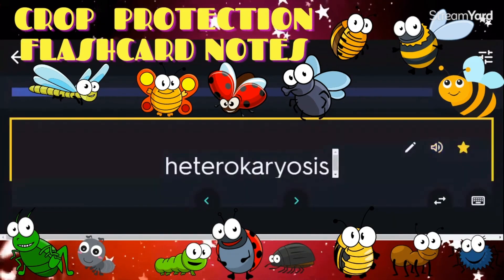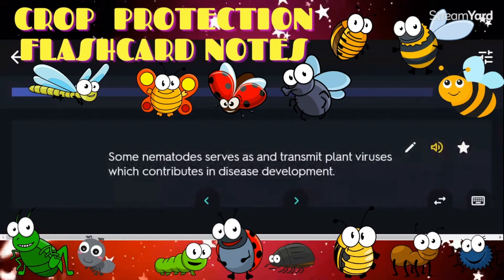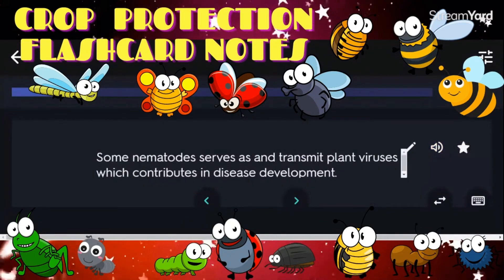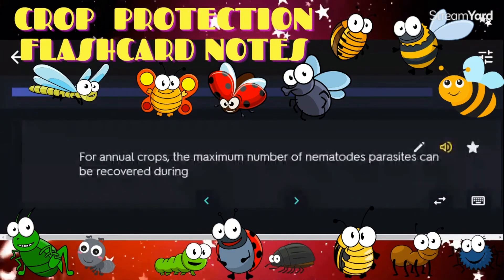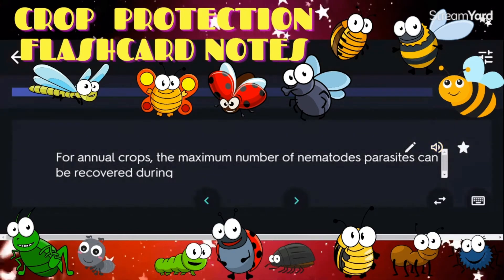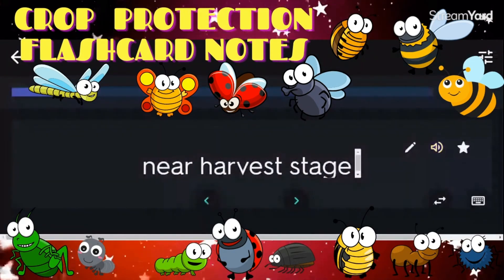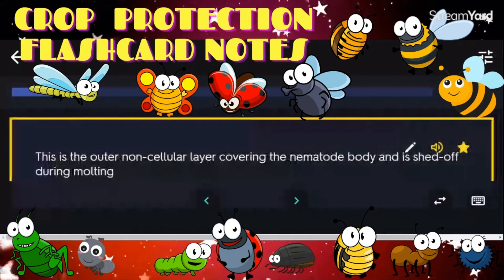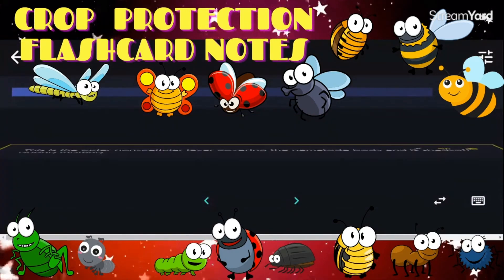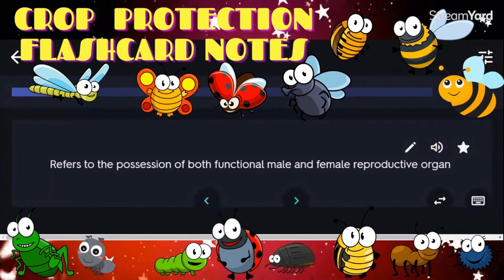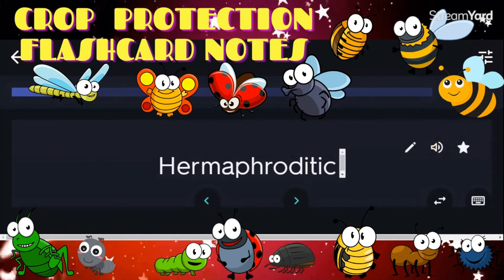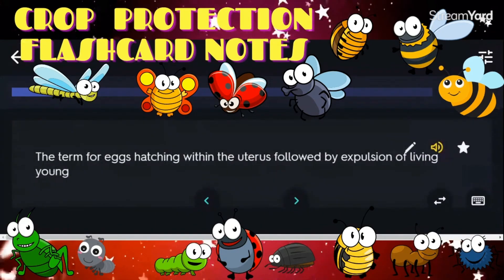Some nematodes serve as vectors and transmit plant viruses, contributing to disease development. For annual crops, the maximum number of nematode parasites can be recovered during the near-harvest stage. The outer non-cellular layer covering the nematode body, shed during molting: cuticle. Possession of both functional male and female reproductive organs: hermaphroditic. Eggs hatching within the uterus followed by expulsion of living young: ovoviviparous.